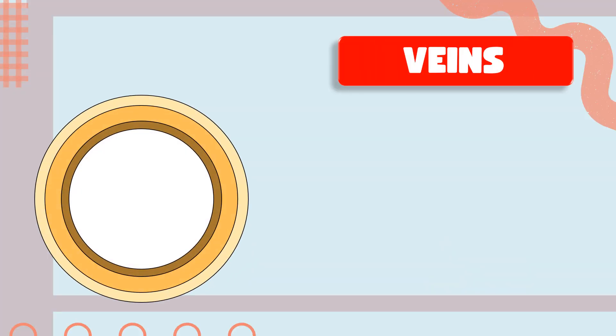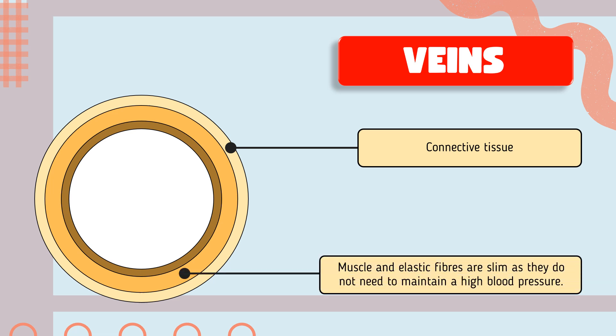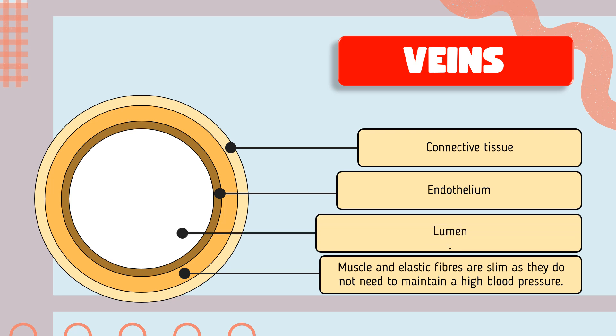Regarding the structure of veins — the structure is similar to arteries. The outer layer is formed of connective tissue or collagen fiber. The middle layer generally has muscle and elastic fiber. The inner membrane is formed of endothelium. It has a wide lumen because the blood travels at low pressure.